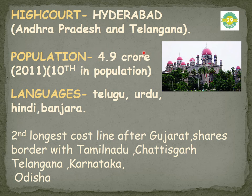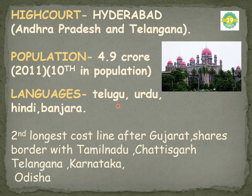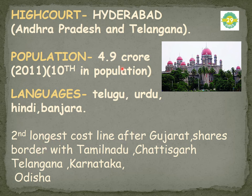The overall population of the state is 4.9 crore as of the 2011 census, placing Andhra in 10th position nationally. Languages spoken include Telugu, Urdu, Hindi, and Banjara. Andhra Pradesh has the second longest coastline after Gujarat, running along the Bay of Bengal. It shares borders with Tamil Nadu, Chhattisgarh, Telangana, Karnataka, and Odisha — a likely exam question.